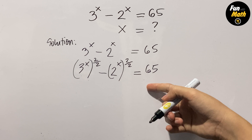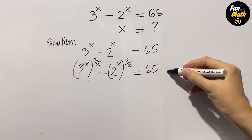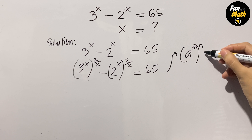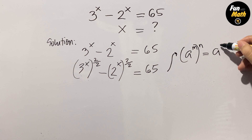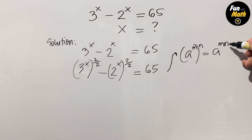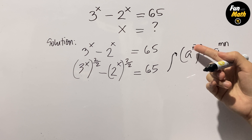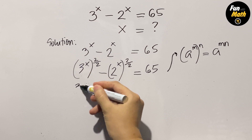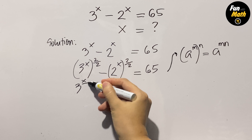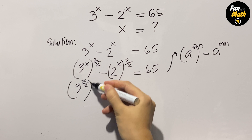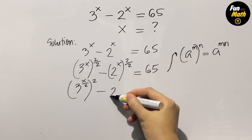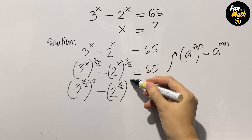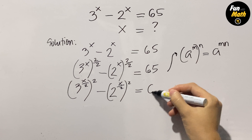So for this we have the rule: a to the power of m, whole to the power of n, is also equal to a to the power of mn — we've just multiplied the powers. And that gives us 3 to the power of x over 2, whole to the power of 2, minus 2 to the power of x over 2, whole to the power of 2, equals 65.